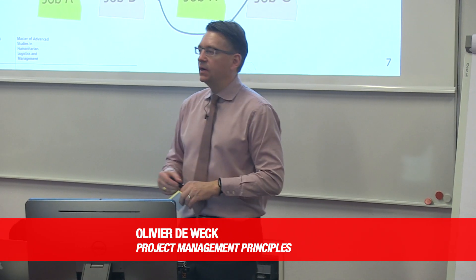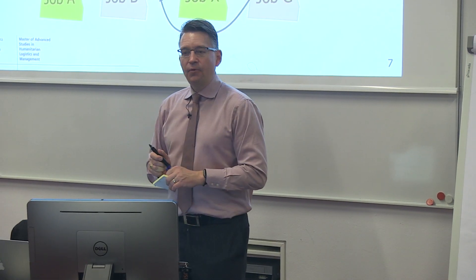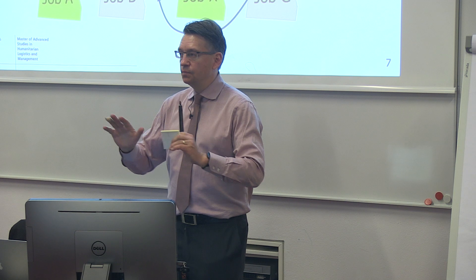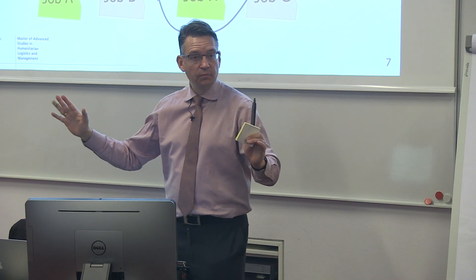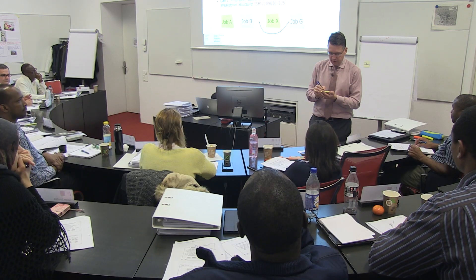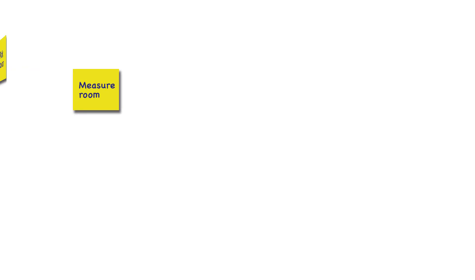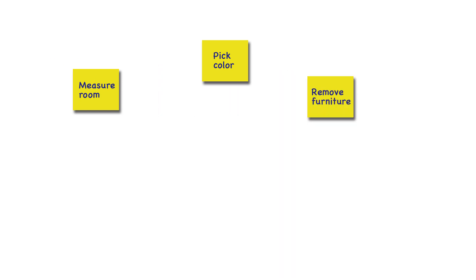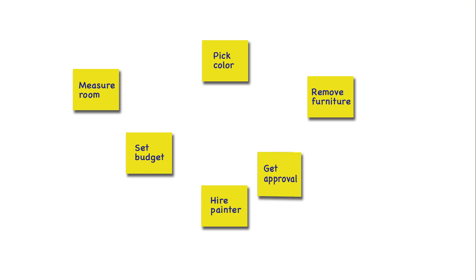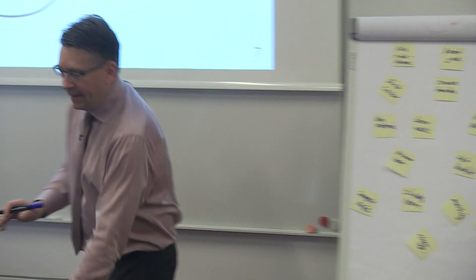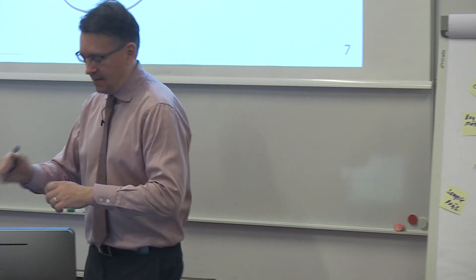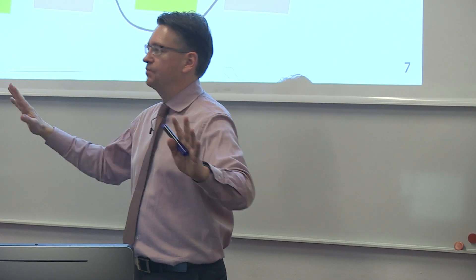Let's do an example. Let's say our project is we want to paint a room. Here's a room — it needs to be painted. What are all the tasks we need to do? Measure the room, pick the color, remove furniture, hire a painter, set the budget, get approval. This first step is just brainstorming.